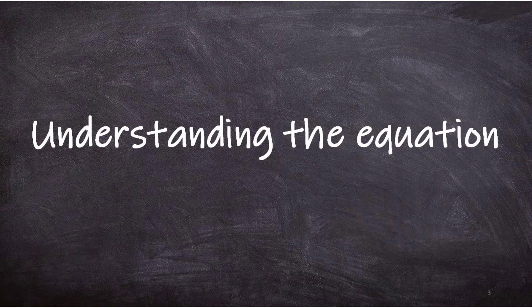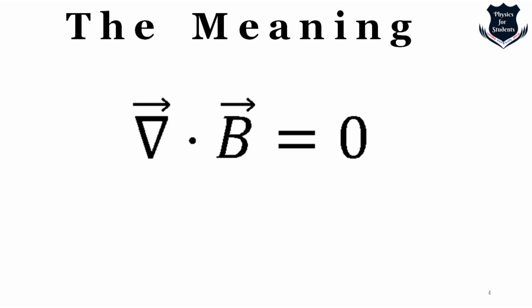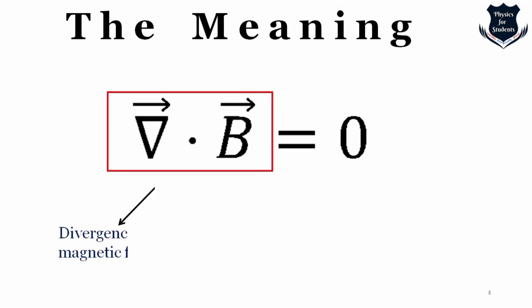First, we start by understanding the basic equation. One thing you need to understand is that the continuous nature of the magnetic field makes the differential form of Gauss's law quite simple. The differential form is written as: del dot B equals zero. The left-hand side of this equation is a mathematical description of the divergence of the magnetic field — the tendency of the magnetic field to flow more strongly away from a point rather than towards it.